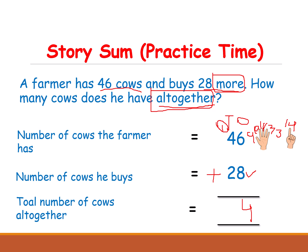Now in the tens place: 1 plus 4 equals 5, then 5 plus 2 — open fingers, after 5: 6, 7. Total number of cows he has is 74.